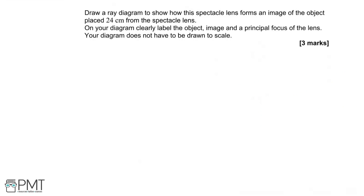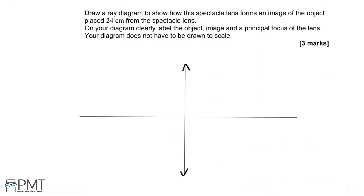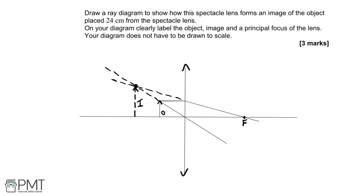Draw a ray diagram to show how this spectacle lens forms an image of the object placed 24 cm from the spectacle lens. Clearly label the object, image, and a principal focus of the lens. The diagram does not have to be drawn to scale. First, draw the axes, then draw the position of the object. Draw the paths of the light rays, mark the position of the focal point, and extrapolate those two lines back to the point where they cross — that's the position of the image. All straight lines must be drawn with a ruler.